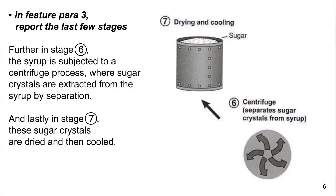In Feature Para 3, report the last few stages. Further, in Stage 6, the syrup is subjected to a centrifuge process where sugar crystals are extracted from the syrup by separation. And lastly, in Stage 7, these sugar crystals are dried and cooled.